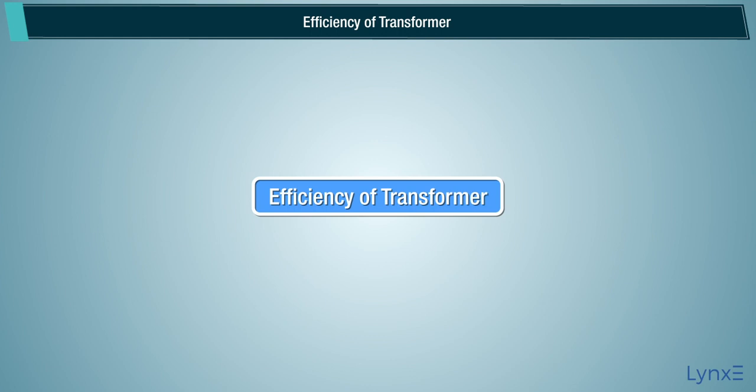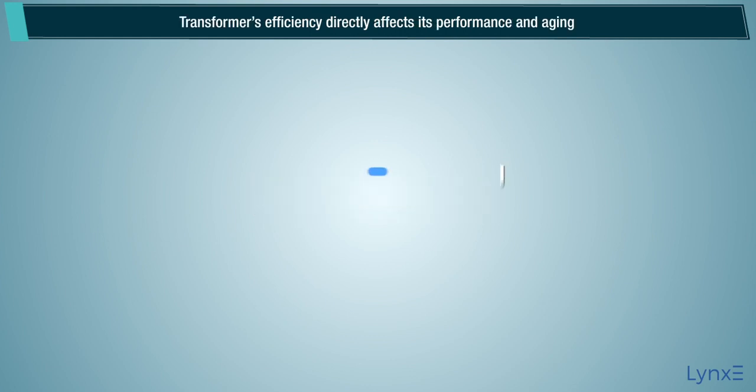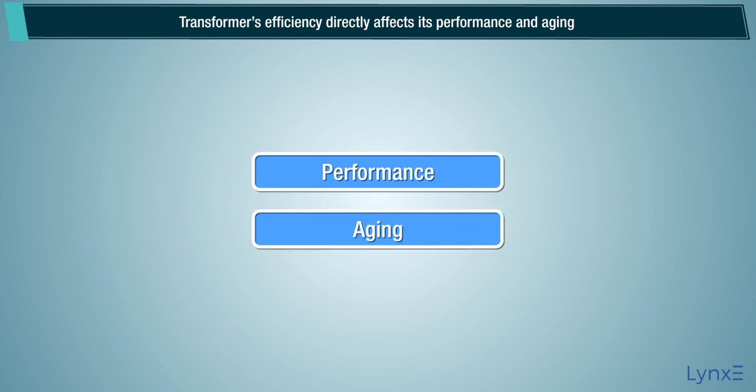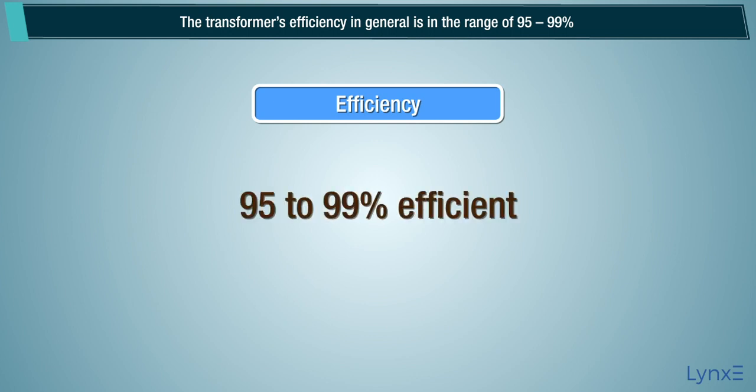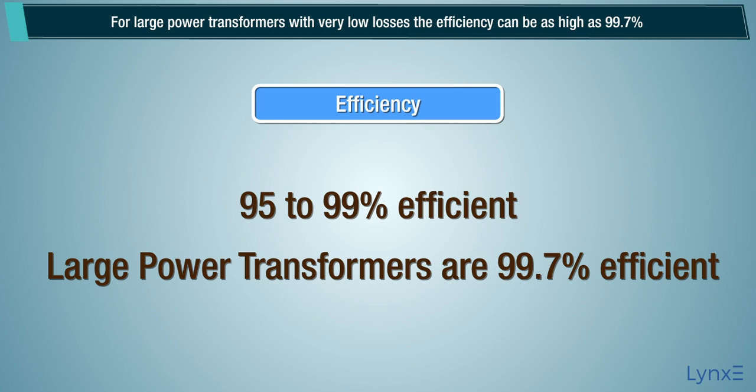Efficiency of transformer. Transformers efficiency directly affects its performance and aging. The transformer's efficiency in general is in the range of 95-99%. For large power transformers with very low losses, the efficiency can be as high as 99.7%.